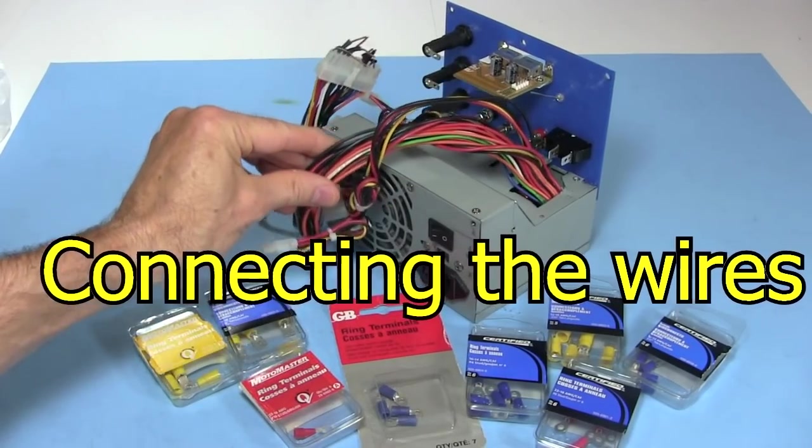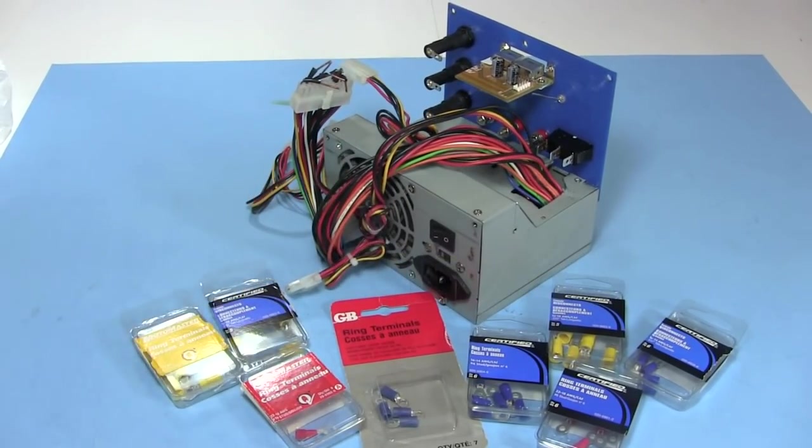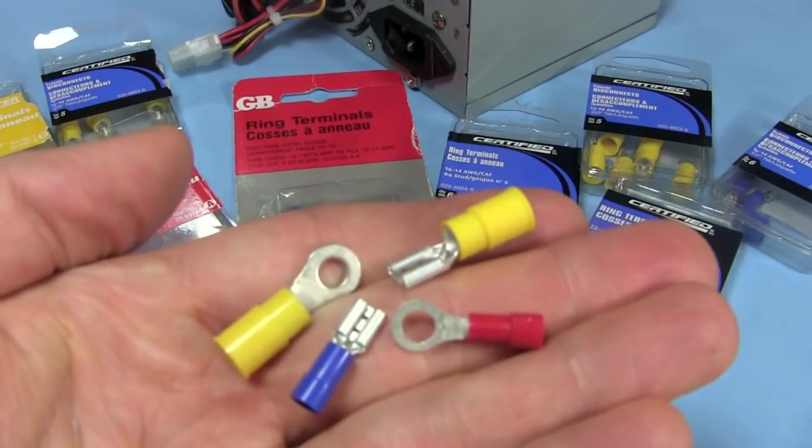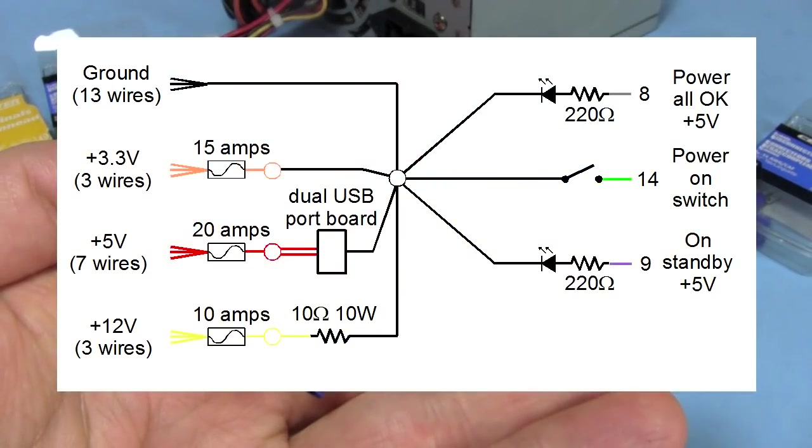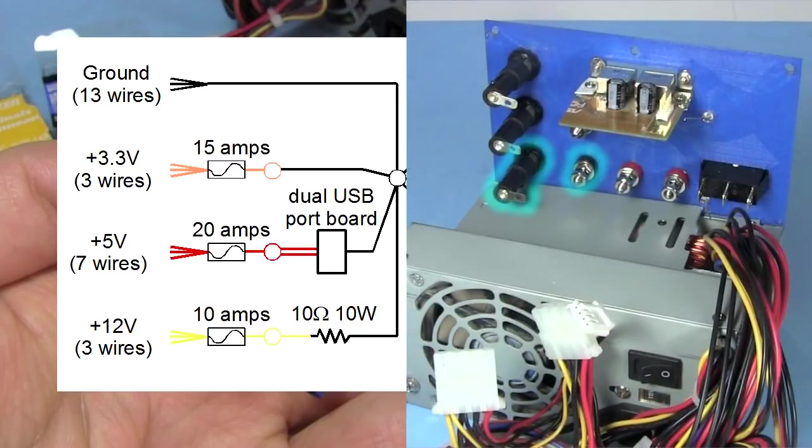Lastly, comes connecting the wires inside to all those parts on the front panel. Mostly, I'll use ring terminals and disconnects for connecting to the parts. Once again, here's the wiring diagram. I'll start at the bottom of the front panel and work my way up. So the yellow 12 volt wires are first.